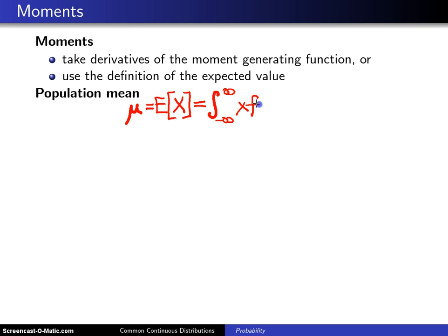Again, integrals because we have a continuous distribution here. But for the uniform distribution, we integrate over the support, which is the integral from a to b of x multiplied by the probability density function for the uniform a, b distribution, which is 1 over b minus a.